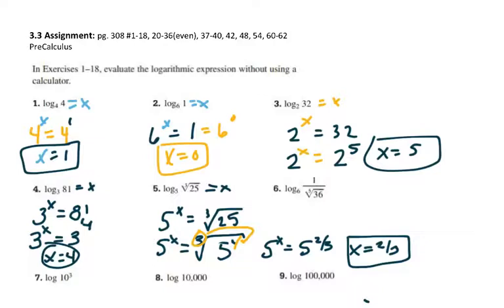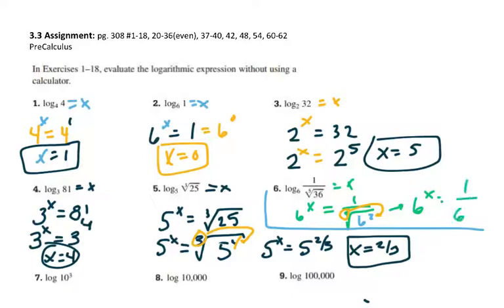Alright. The next one is the same idea. We're going to write 6 to the x equals 1 over the 5th root of 36. So I need to rewrite 36 as a power of 6, so 6 squared. And then just as we did before, that power becomes the denominator. So that little 5 is going to be there. So now we're at 6 to the x equals 1 over 6 to the 2 fifths. But then of course to make it in the numerator, we have 6 to the negative 2 fifths. So x is negative 2 fifths.